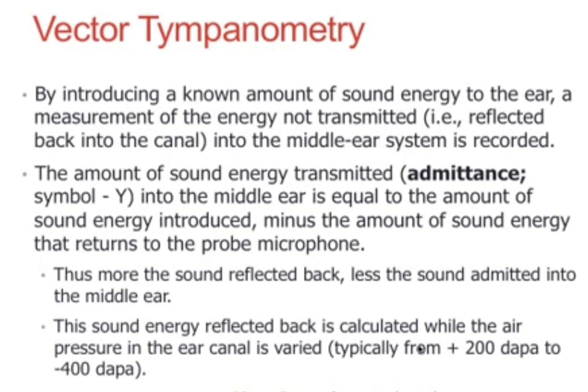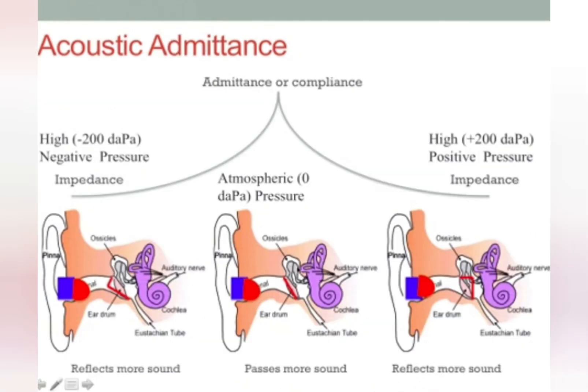We can know the amount of energy that is admitted and reflected back by changing the pressure in the air canal. The pressure is altered from 200 dPa to negative 400 dPa, and that changes the compliance of the tympanic membrane. The admittance of sound is maximum when the pressure inside the middle ear and in the air canal is the same — that is at atmospheric pressure or 0 dPa.